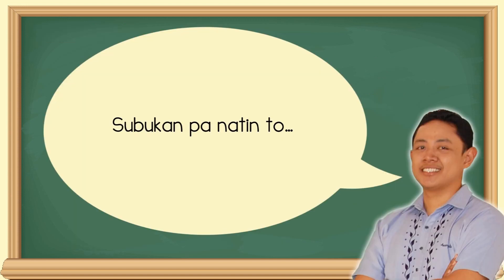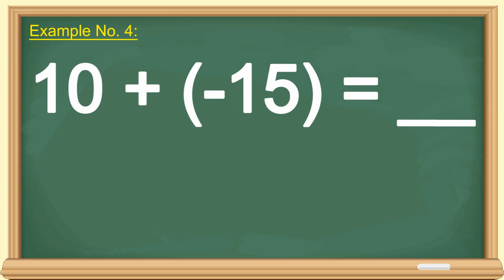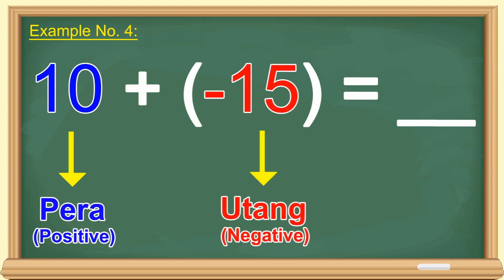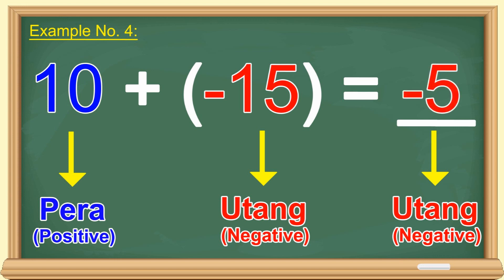Subukan pa natin ito. 10 plus negative 15 is equal to blank. Magkano naman ang pera mo? 10 piso. At magkano naman ang utang mo? 15 pesos. Pag binayaran mo na ang utang mo, anong matitira? Utang o sukli? Utang. At magkano pa ang utang mo? 5 piso. At dahil utang, negative 5 yun. Gets?